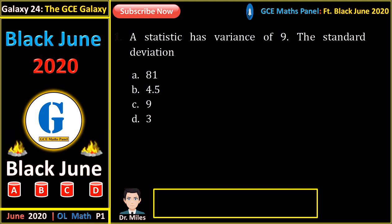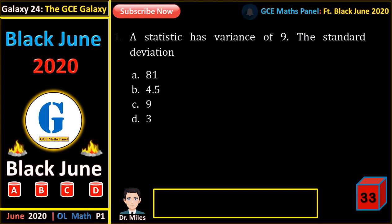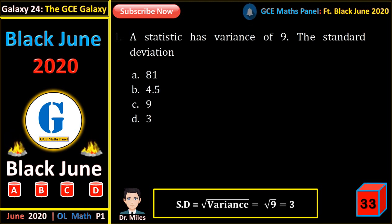A statistic has a variance of 9. What is the standard deviation? Standard deviation is the square root of the variance, and that gives us 3.